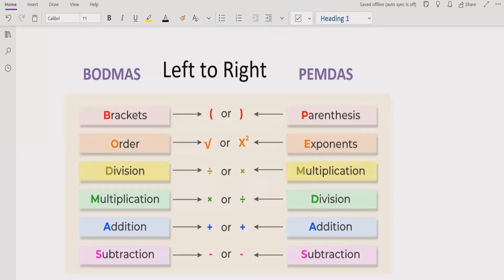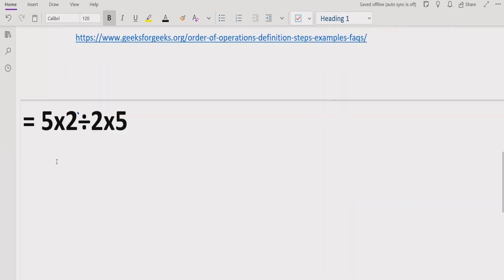Sometimes people solve this expression the wrong way, like saying this is 10 divided by 10, and after that they get the answer is 1. But this answer is wrong. You cannot say the answer is 1 because you have solved it in the wrong way.